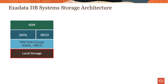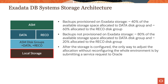The Exadata DB systems use local storage for ASM. When backups are provisioned on Exadata storage, 40% of the available storage space is allocated to the data disk group and 60% is allocated to the REDO disk group. When backups are not provisioned on Exadata storage, 80% of the available storage space is allocated to the data disk group and 20% is allocated to the REDO disk group. After the storage is configured, the only way to adjust the allocation without reconfiguring the whole environment is by submitting a service request to Oracle.